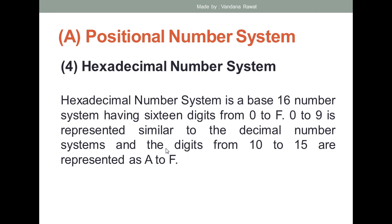These are all the positional number systems. In case of hexadecimal we can mix these digits — for example, a hexadecimal number can be A19, where A represents 10 and 19 are digits within the normal range. Another example can be FC77, where F represents 15, C represents 12, and 77 are digits within the range of zero to nine. Accordingly I'll show you the conversion of these number systems.